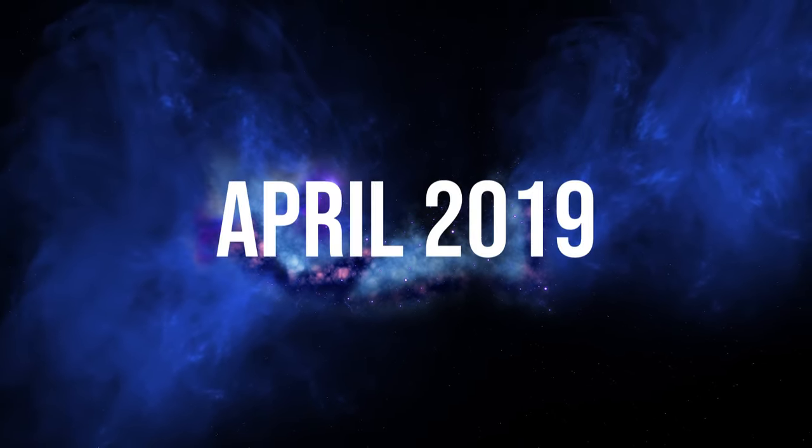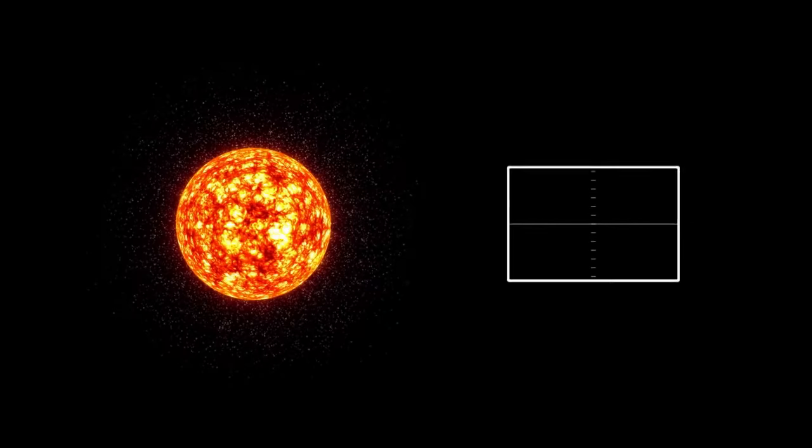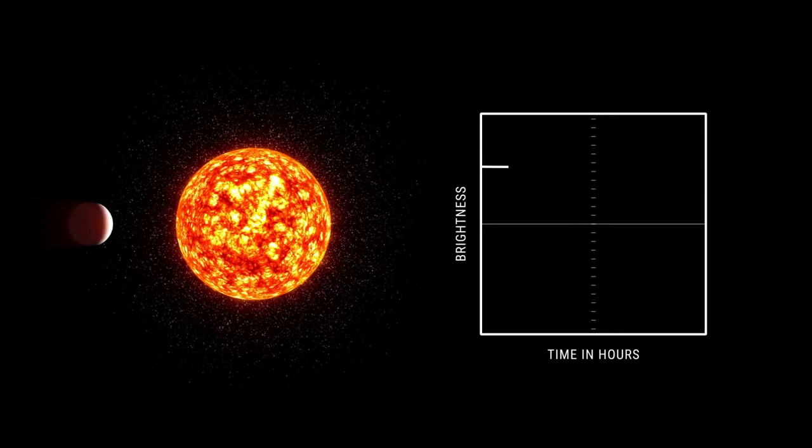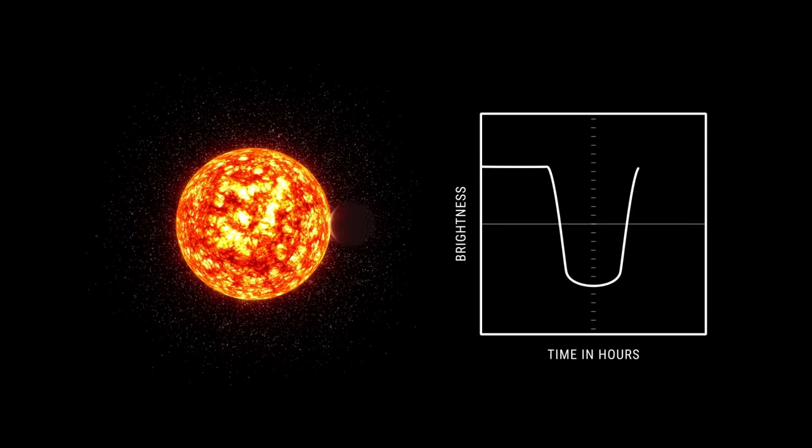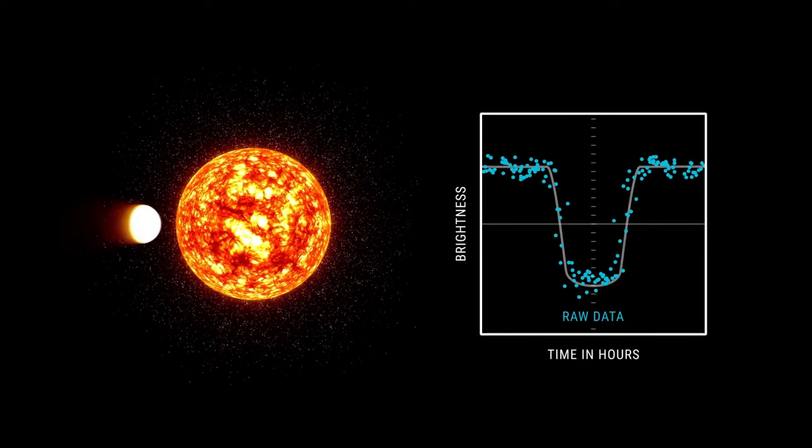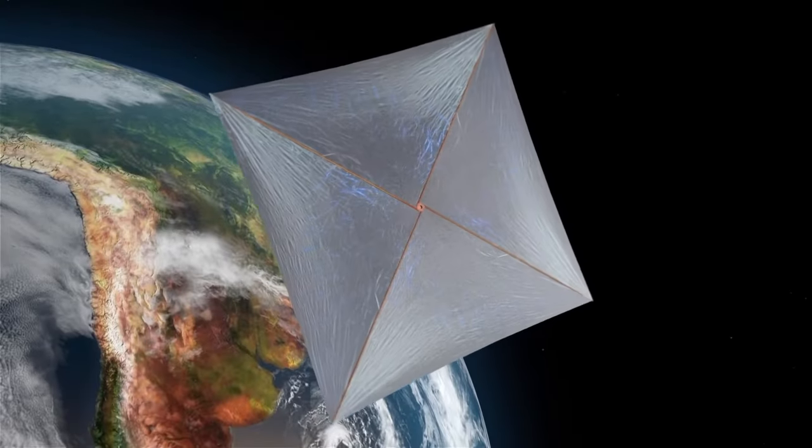The planet was first reported in April of 2019, using radial velocity data from ESO's HARPS instrument. However, a study questioned the planetary nature of the observed radial velocity signal corresponding to Proxima C.